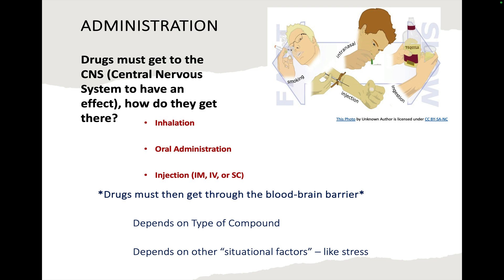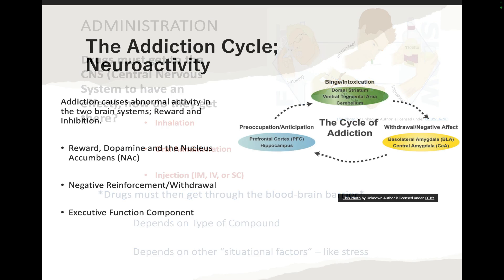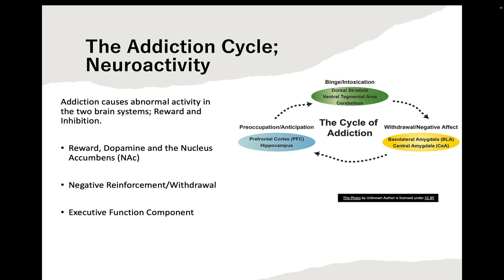Whether a drug passes through the blood-brain barrier also depends on the type of drug and its chemical compound — certain drugs are more able to get through the blood-brain barrier much quicker than others. This is also dependent on situational factors like stress, because stress can actually thin out the blood-brain barrier, allowing certain drugs to get through it much quicker.